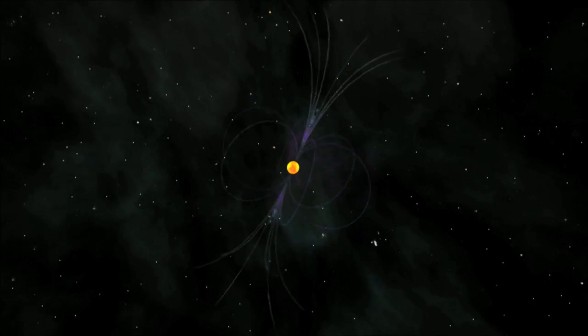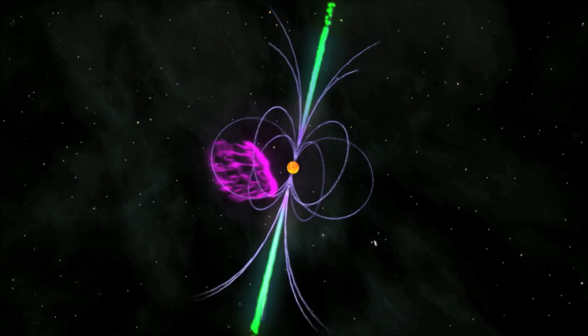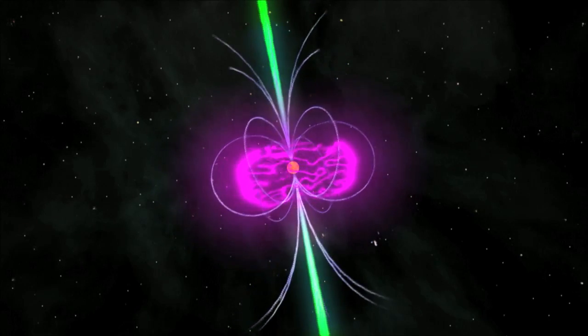Pulsars can spin many times each second, spraying tight streams of radio waves and gamma rays across the universe.